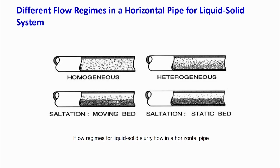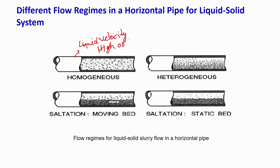Now let us discuss hydraulic conveying, which is the liquid-solid system. In a liquid-solid system, if the liquid velocity is high and the solid fraction is lower, the solid will be uniformly suspended across the pipeline and smooth flow of solids will take place — this is called the homogeneous regime. You can observe these curves either by keeping increasing liquid velocity or by increasing solid loading.